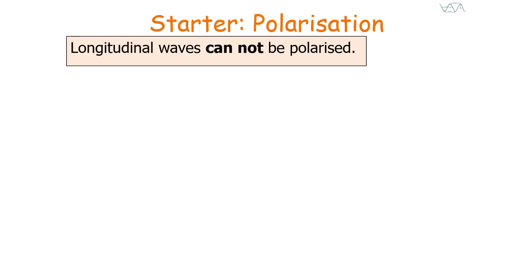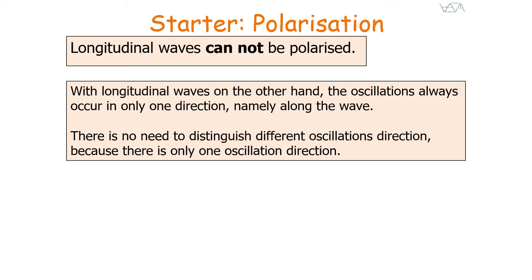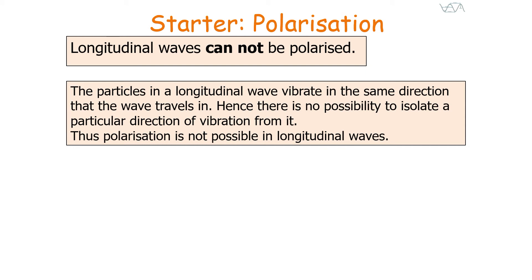Longitudinal waves cannot be polarised. With transverse waves, there is a choice in which direction or plane the oscillations occur — for example, a transverse wave moving in the Z direction could have oscillations in the XZ plane, the YZ plane, or anywhere in between. But with longitudinal waves, the oscillations only occur in the same direction as the energy transfer, by definition. There is no need to distinguish between different oscillation directions because there is only one, so there is no possibility to isolate a particular direction of vibration.